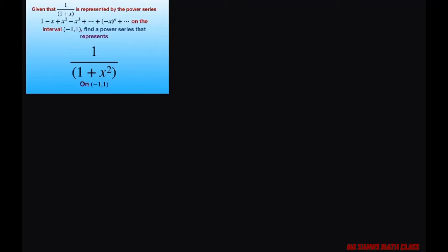So basically, since it's represented by this, all we're going to do is let our x here. We have 1 minus x plus x squared minus x cubed plus dot dot dot plus negative x to the power of n plus dot dot dot.